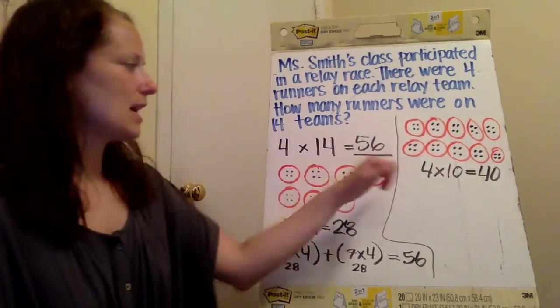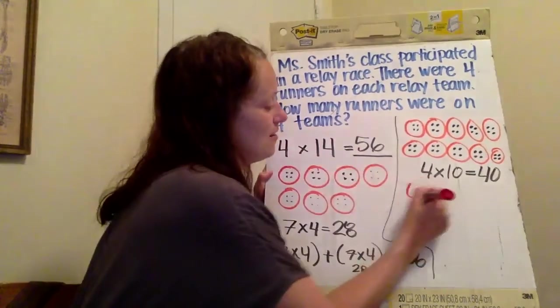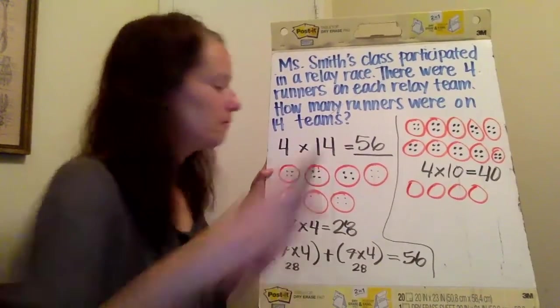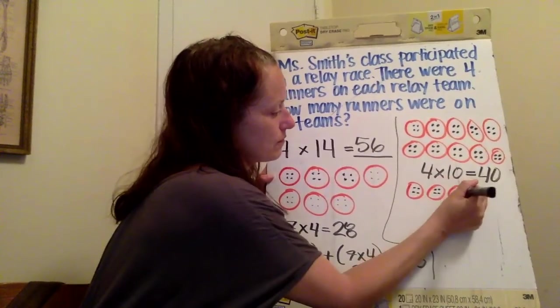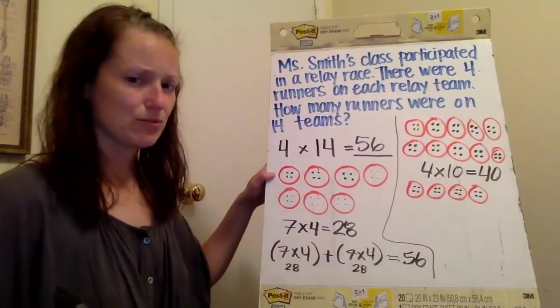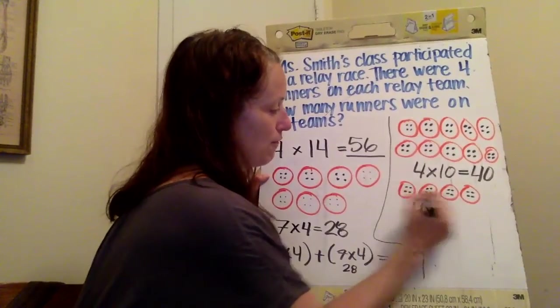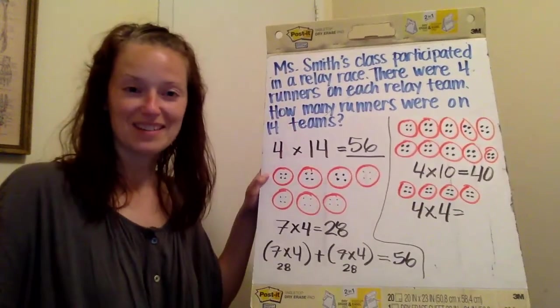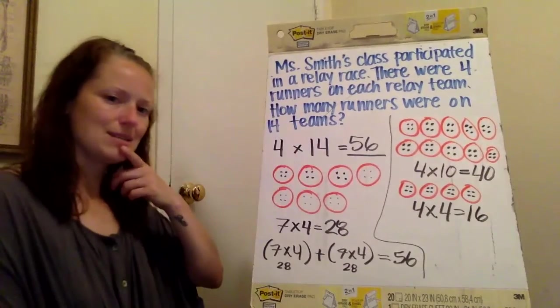I've already done my 10, but I still have four more groups that I need to figure out. So I need to still do four more groups. And I could write this equation by saying four groups of four people in each group. Do you know that fact? Yeah, it's 16. So then how do I get my answer? Where is my answer?